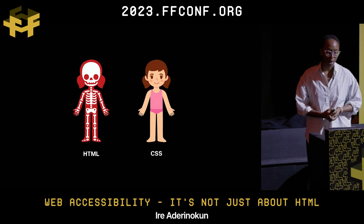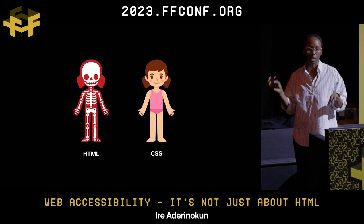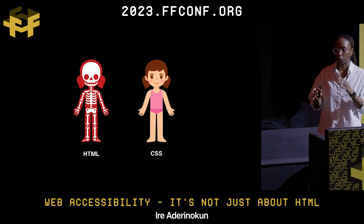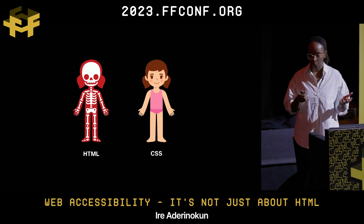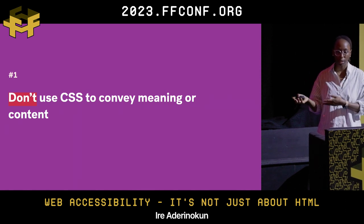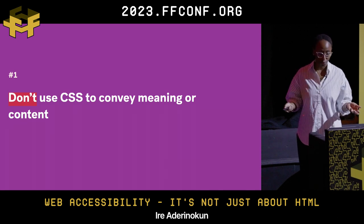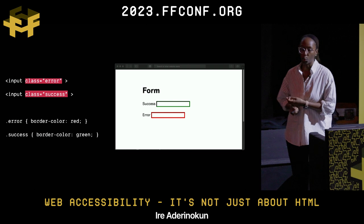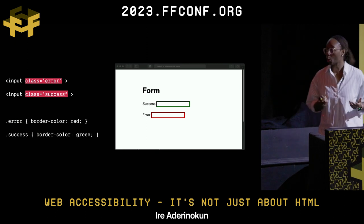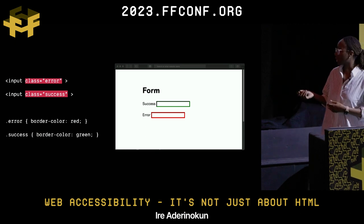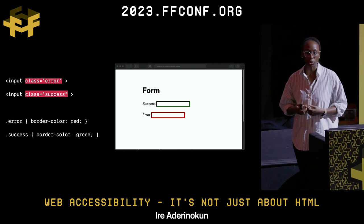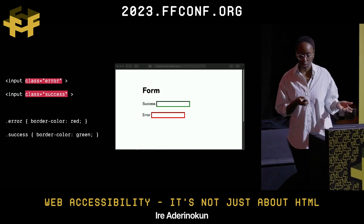That's why it's really important to have the distinction between HTML for content and CSS for styling, and to make sure you're not using CSS for what HTML is actually for. This brings me to my first point: we shouldn't be using CSS to convey any meaning or content that HTML is supposed to handle. For example, if the only way you convey that a form element has an error is through styling a border, that wouldn't be communicable to users of assistive technologies.